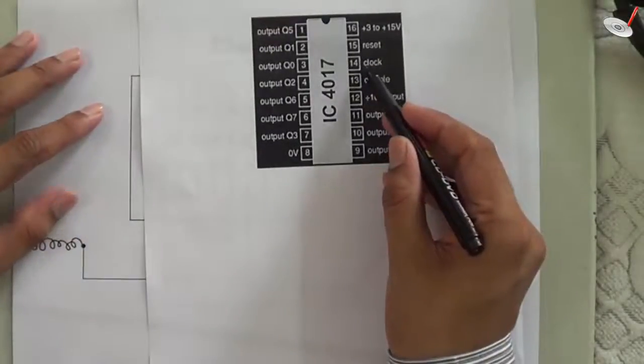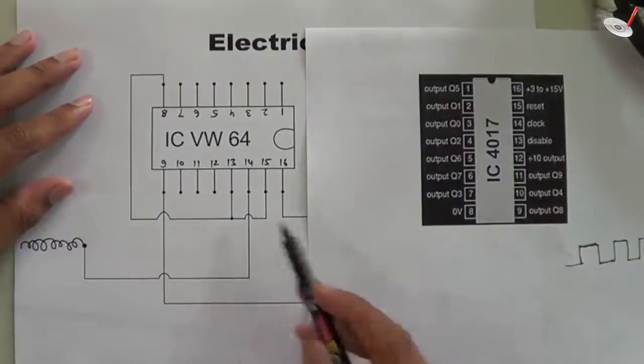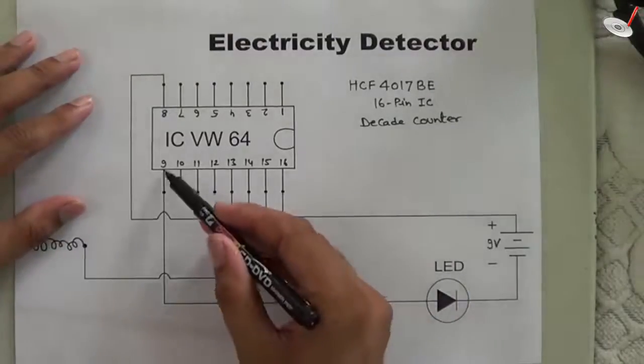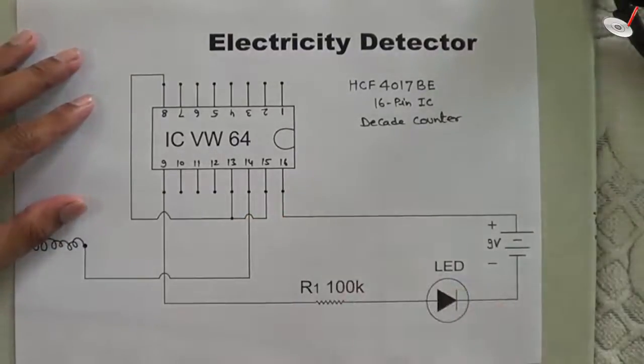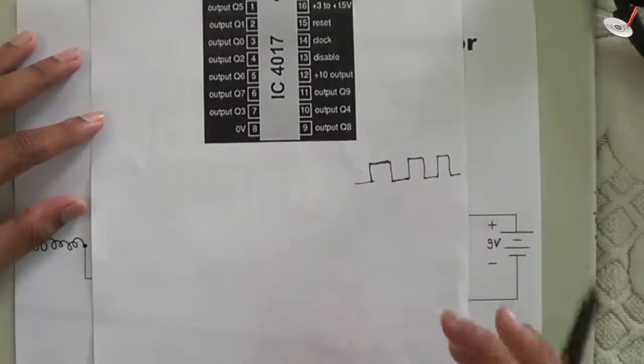When we apply a clock signal using this wire, the circuit gives output. We have taken output here from pin number 9. Pin number 9 represents output 8.